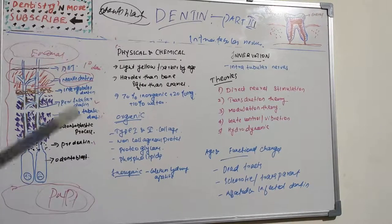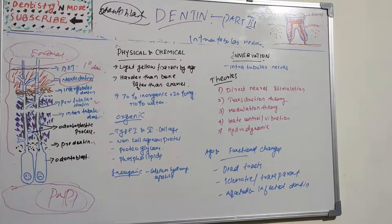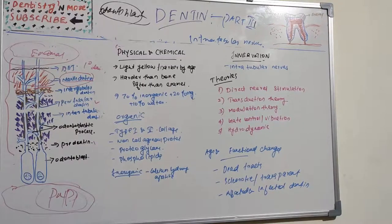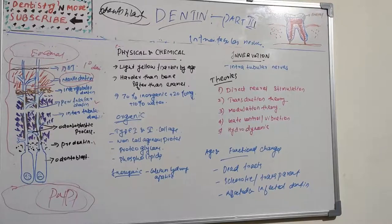The main drawback of direct neural stimulation is that nerves in dentinal tubules are not commonly seen, and even if present, they do not extend beyond the inner dentine. Topical application of local anesthetic agents does not abolish sensitivity, so this theory is not well accepted.